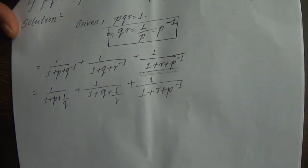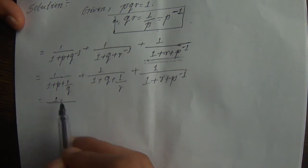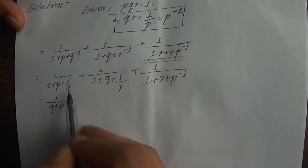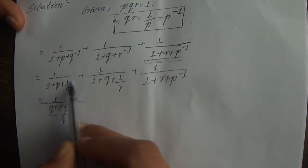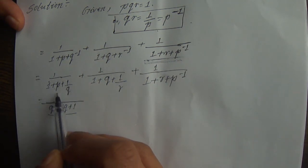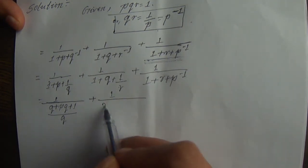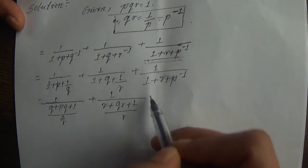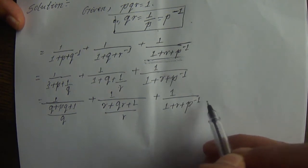So this is P inverse. Now we have LCM: Q plus P into Q, plus 1 by Q. Here LCM is Q: 1 by 1, P by 1, plus 1 by R. Here LCM is R: QR plus 1 by R, plus P inverse.